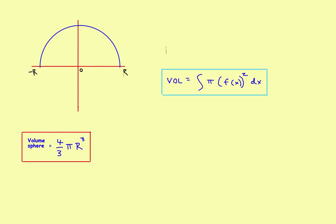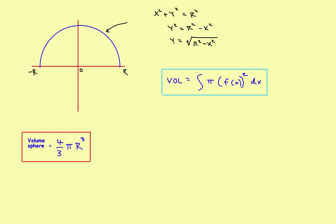From r to negative r, you need a formula — some f of x. The equation for a circle centered at the origin is x squared plus y squared equals r squared. Solving for y: y squared equals r squared minus x squared, so y equals the square root of r squared minus x squared. We use the positive root since we just want the top half of the circle.